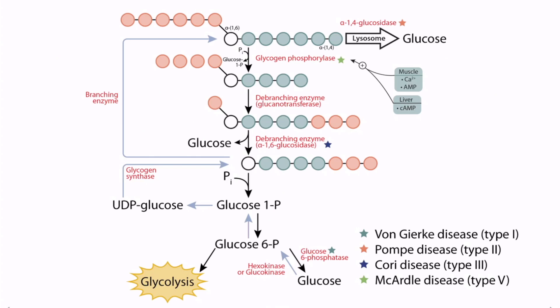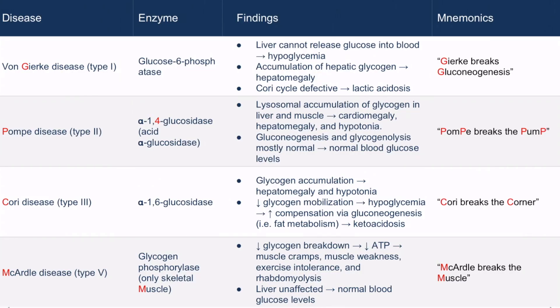From the map, we can see that alpha-1,4 glucosidase is responsible for breaking down glycogen in lysosomes. From the summary table, you can remember this disorder by the phrase 'Pompe breaks the pump.' You can also see that this patient presented with many of the symptoms found in this table, including cardiomegaly.